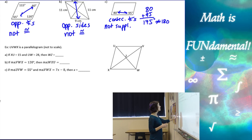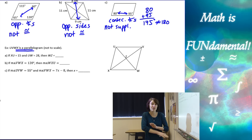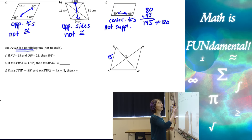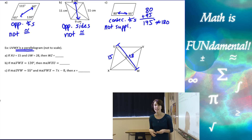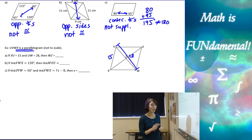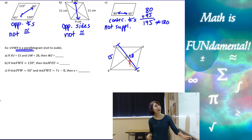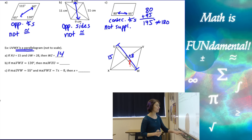For the last example, we're given that UVWX is a parallelogram, so we can assume everything we know about parallelograms for this shape. Part a: if XU is 15 and UW is 28, I'm marking my diagram with this information. We need to find WZ. Since the diagonals of a parallelogram bisect each other, we cut UW in half, so WZ equals 14.